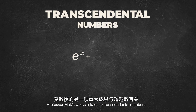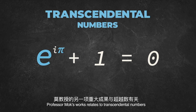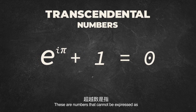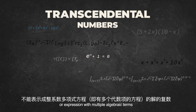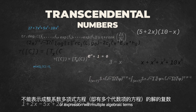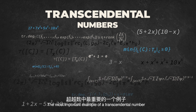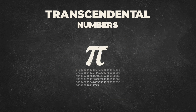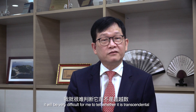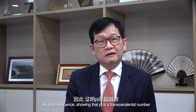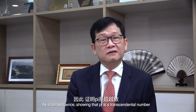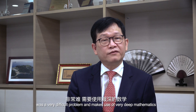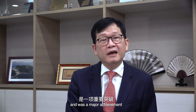Another major achievement of Professor Mok's work relates to transcendental numbers. These are numbers that cannot be expressed as a solution to a polynomial equation or expression with multiple algebraic terms with integer coefficients. The most important example of a transcendental number is the constant pi. Showing that pi is a transcendental number is a very difficult problem and makes use of very difficult mathematics. It was a major achievement.